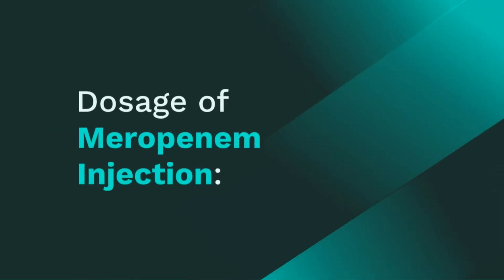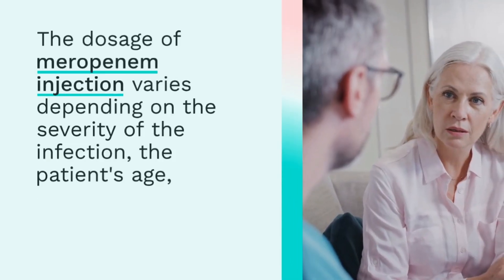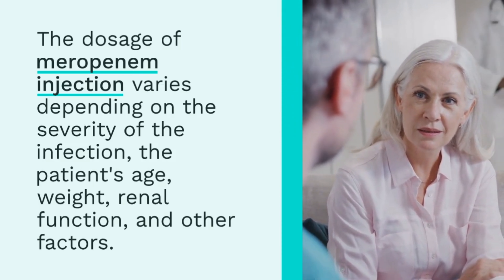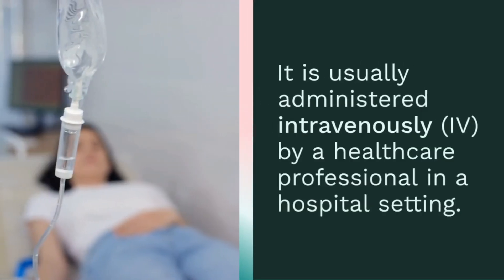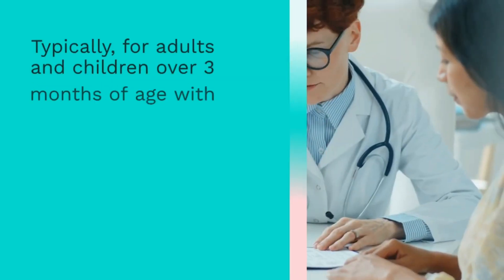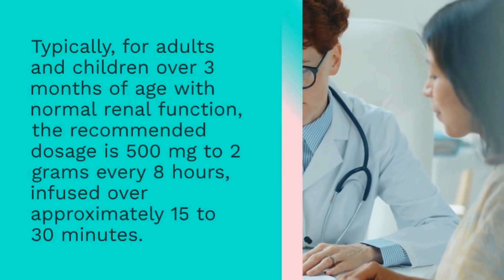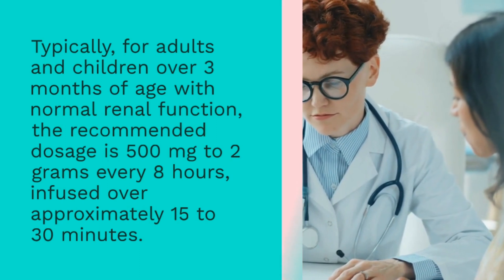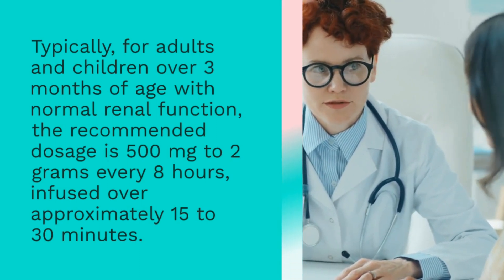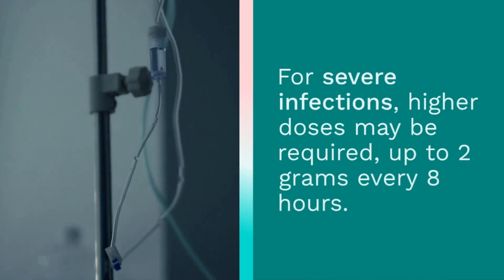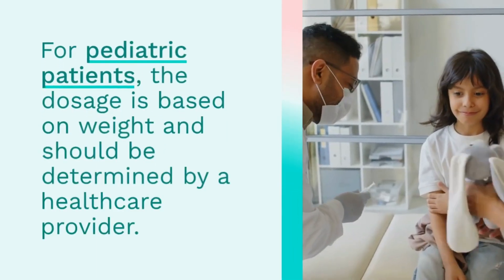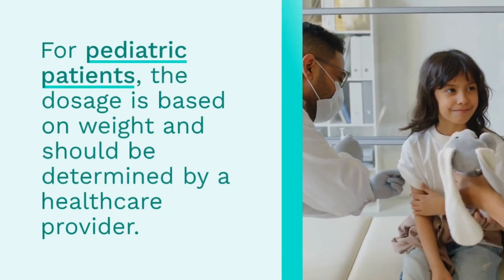Dosage of Meropenem Injection. The dosage of meropenem injection varies depending on the severity of the infection, the patient's age, weight, renal function, and other factors. It is usually administered intravenously by a healthcare professional in a hospital setting. Typically, for adults and children over three months of age with normal renal function, the recommended dosage is 500 mg to 2 g every 8 hours, infused over approximately 15 to 30 minutes. For severe infections, higher doses may be required, up to 2 g every 8 hours. For pediatric patients, the dosage is based on weight and should be determined by a healthcare provider.